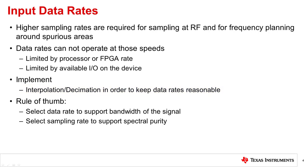When using decimation or interpolation, a good rule of thumb is to select a data rate that can support the bandwidth of the signal and a sample rate that can support spectral purity. In this next section, we will discuss decimation concepts. This will include a definition, time versus frequency comparison, advantages and disadvantages, and some example TI parts that are using decimation.